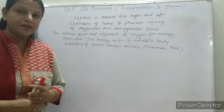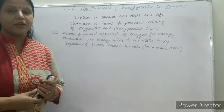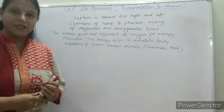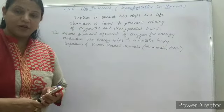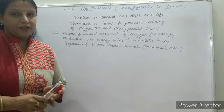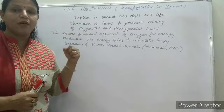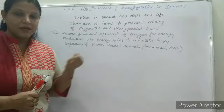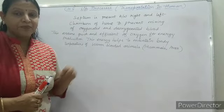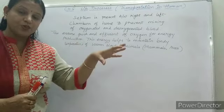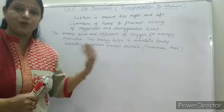In cold-blooded animals, they don't require a continuous supply of oxygen and energy to maintain their body temperature because their body temperature differs according to their environment. So they have three-chambered or two-chambered hearts. In amphibians and reptiles, they have a three-chambered heart in which partial mixing of oxygenated and deoxygenated blood takes place in the third chamber. In the two-chambered heart of fishes, blood directly passes through the gills for oxygenation, and from there oxygenated blood passes through all body parts.